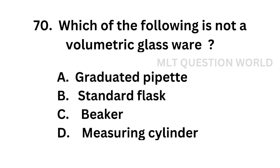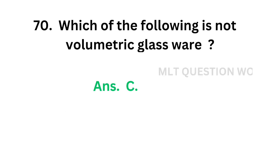Question number 70: Which of the following is not a volumetric glassware? Option A: Graduated pipette, Option B: Standard flask, Option C: Beaker, Option D: Measuring cylinder. The correct answer is Option C, Beaker. Beaker is not a volumetric glassware.